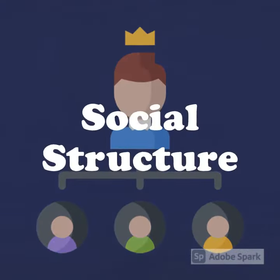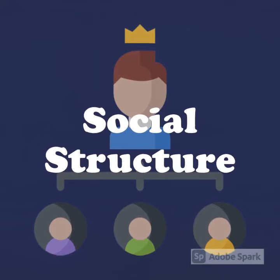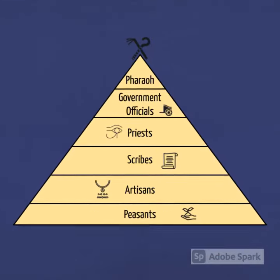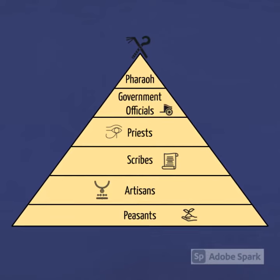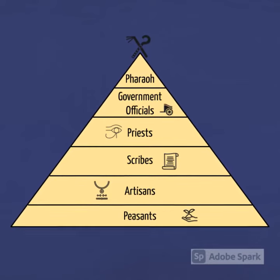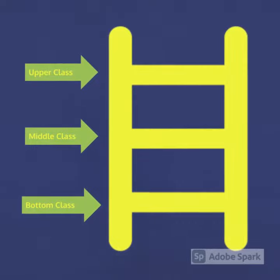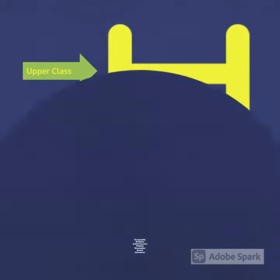Social structure is the way a society or civilization is organized. Do social classes exist? Do men and women have different roles in society? Who is considered the most important and most powerful? Which group is considered the least important?